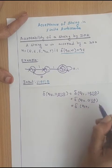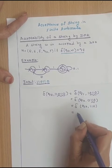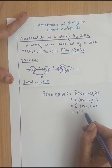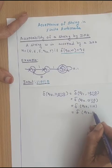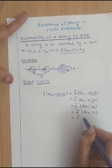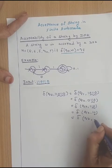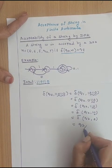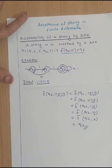Q2, remaining part is 110. Now check with Q2 and 1. Q2 on 1 is also to itself. So Q2, remaining part 10. Next delta of Q2, 1 — Q2 on 1 is also Q2. Remaining part is 0. Finally delta of Q2, 0 is also Q2. So we have reached the final state. For the given input string we are able to reach the final state from the initial state. Thus this string is accepted by the DFA.